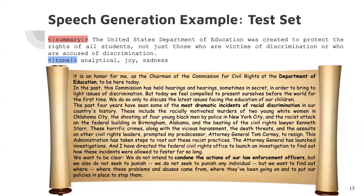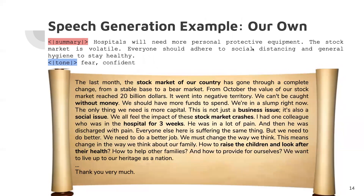We will now briefly go over some of our results. Here is an example speech generated from a summary in our test dataset. The summary mentions discrimination and that the Department of Education should protect all students. The generated speech refers directly to the Department of Education and examples of discrimination. Here is another example speech generated from our own summary and tone, so the model never saw this during training. The summary mentions both the volatile stock market and hygiene, and the generated speech refers to both a stock market crash and the need to maintain hygiene.